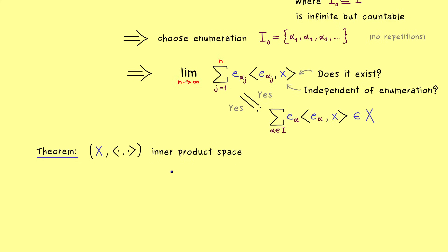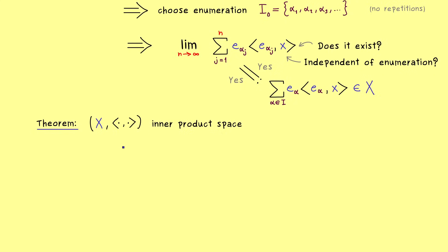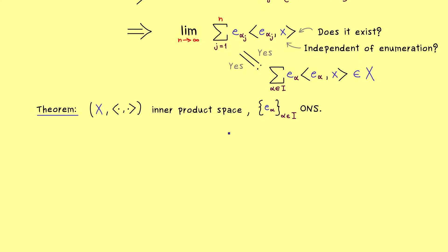And as already mentioned, we will formulate Parseval's identity without using any completeness, so we just take a general inner product space X. And moreover, as before, we also choose an orthonormal system in the inner product space. And now the theorem tells us that we have Parseval's identity if and only if we have actually an ONB. And there, please recall, an orthonormal basis is simply a total ONS by definition.